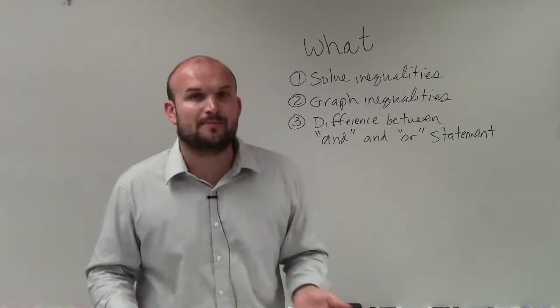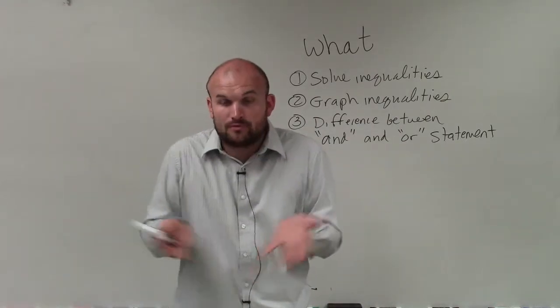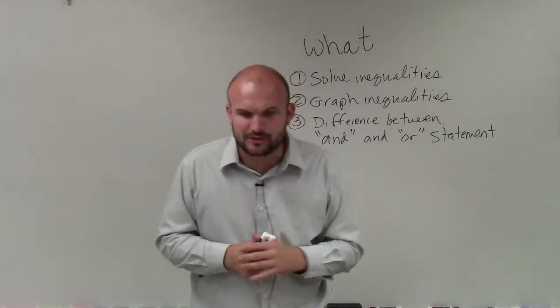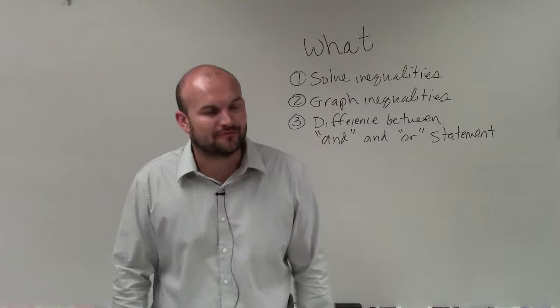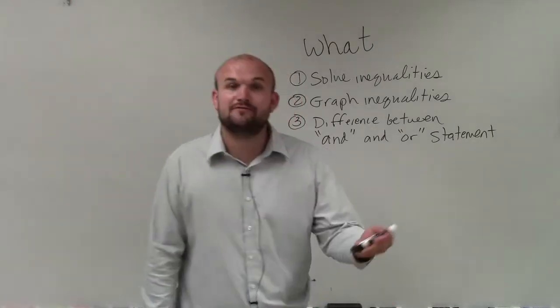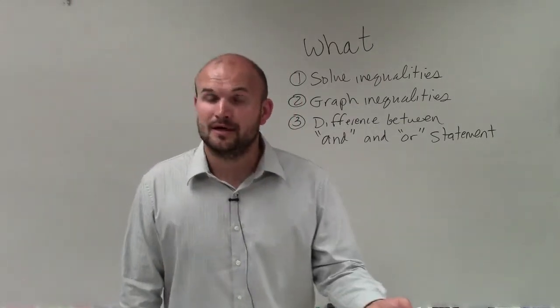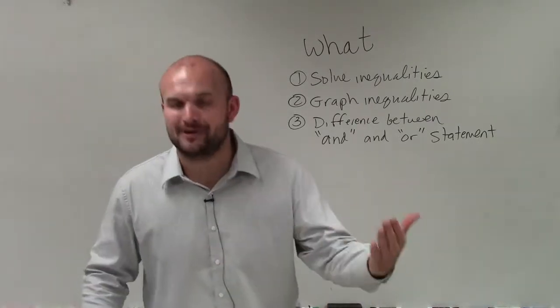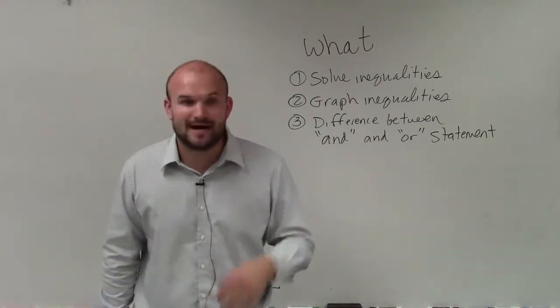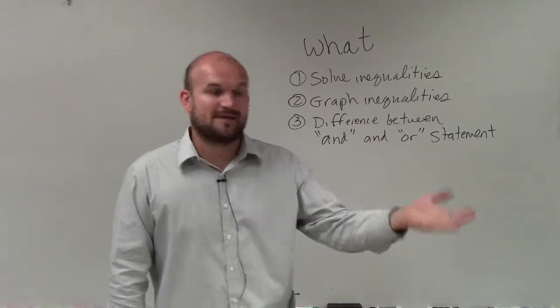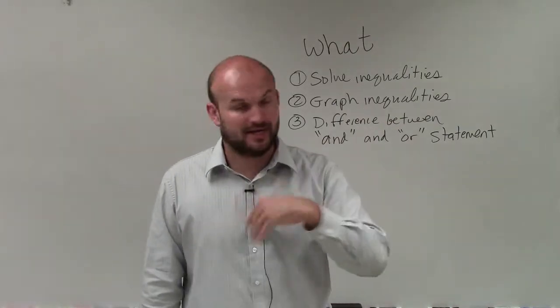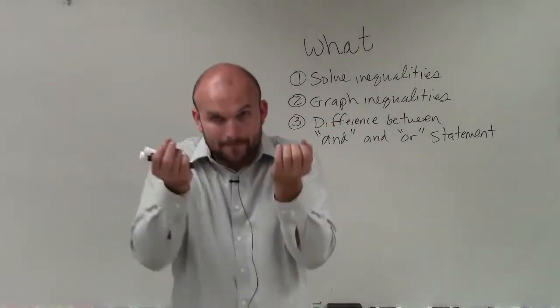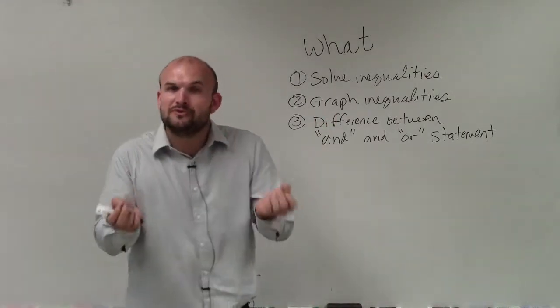The way that I like to think about it is 'and' means both, right? You need to have this and something else. So for instance, during our open house for my math class, if you and your parent come into my open house, I will give you extra credit. So that means if you just show up, you don't get extra credit. If your parent just shows up, you don't get extra credit. But if you and your parent, both of you need to be there to gain extra credit.